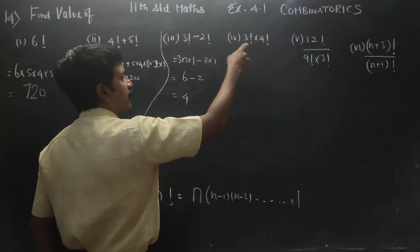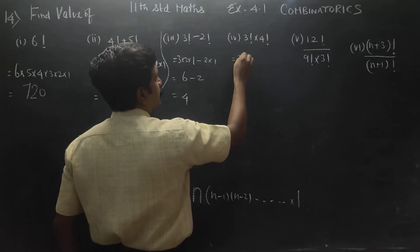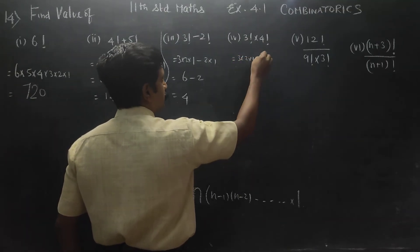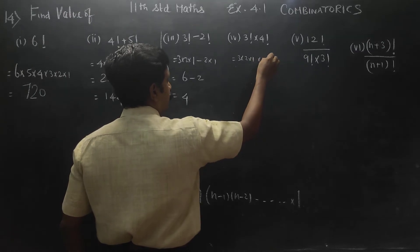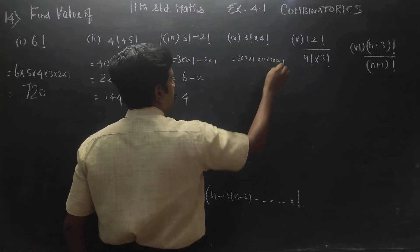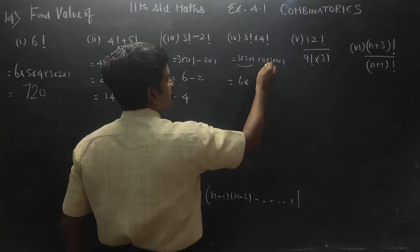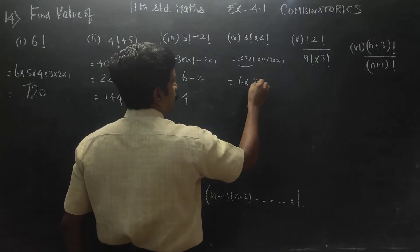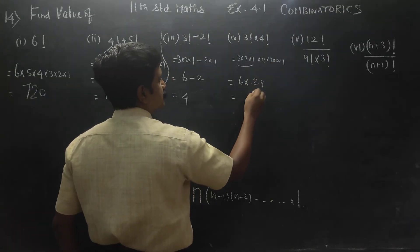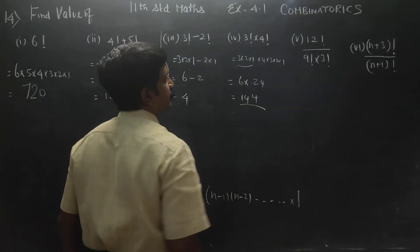Then 3 factorial into 4 factorial. 3 into 2 into 1, into 4 into 3 into 2 into 1. This is 6 into 24, which gives 144 as your answer.